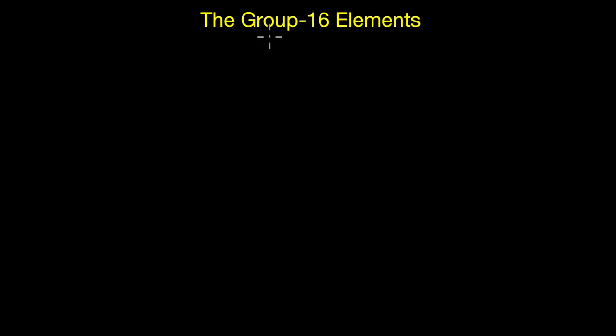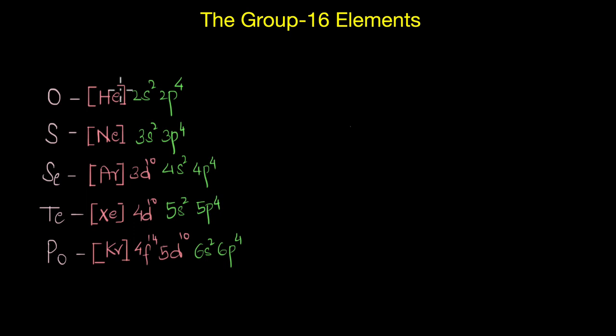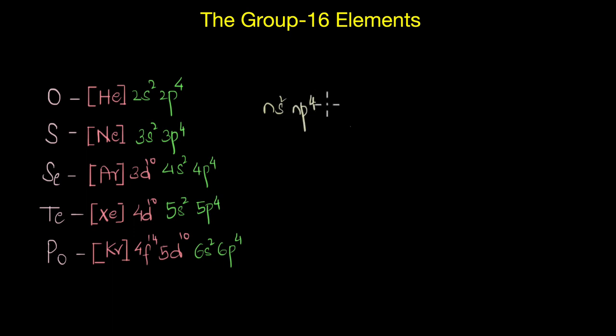This video is going to be an introduction to the Group 16 elements, also called the chalcogens. The chalcogens are oxygen, sulfur, selenium, tellurium, and polonium. From their electronic configurations we can see that they all have ns² np⁴ outer electronic configuration, meaning they have a total of six valence electrons.